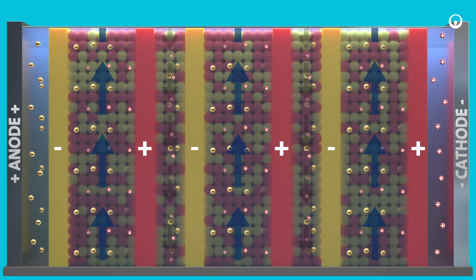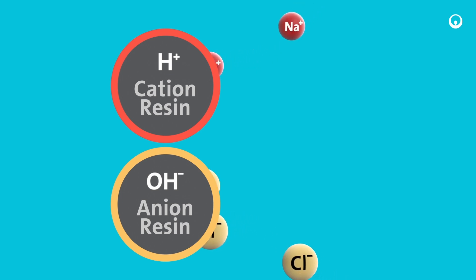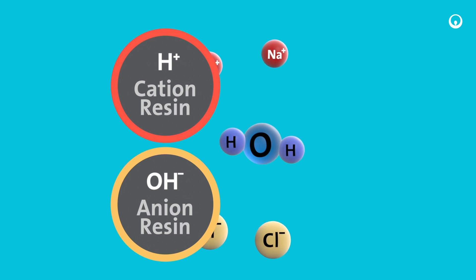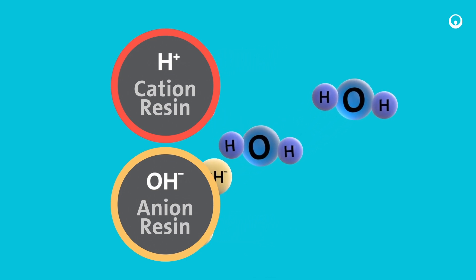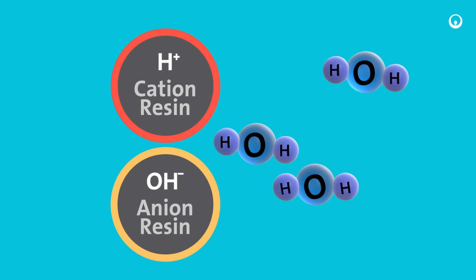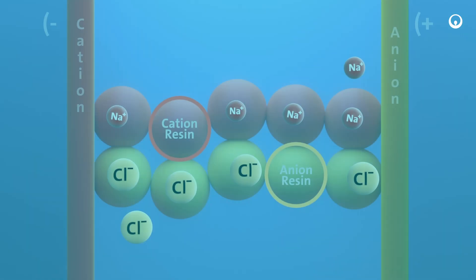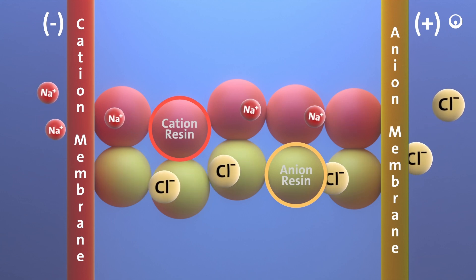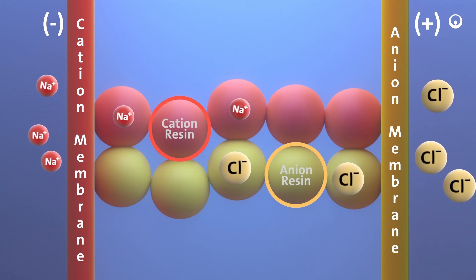With both anion and cation ion exchange resin added to the dilute compartments, ion exchange occurs as per usual kinetic and thermodynamic factors. As the resin picks up ions, hydrogen and hydroxide ions exchanged from the resin combine to form H2O. Ions in the ion exchange resin migrate toward the electrodes, through ion exchange membranes, and into concentrate chambers.